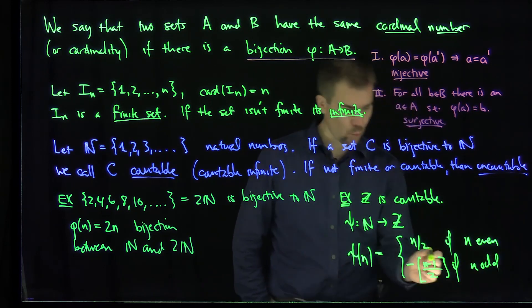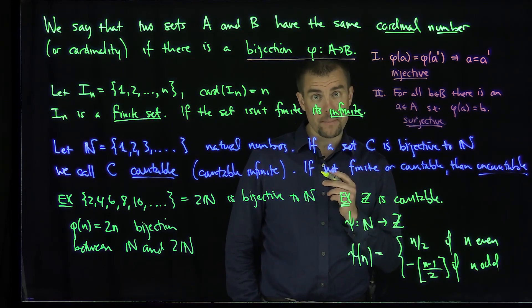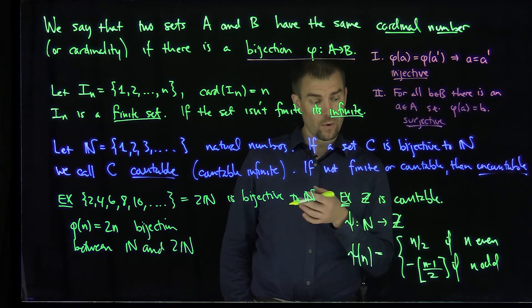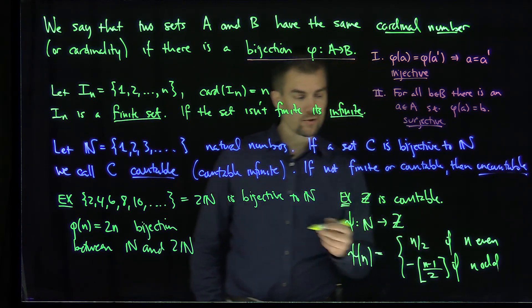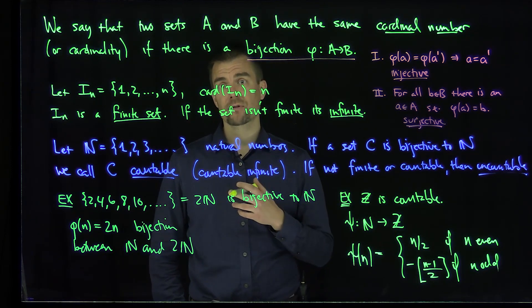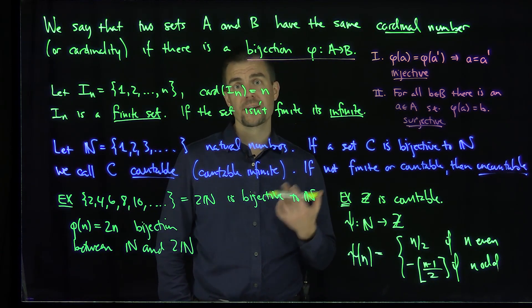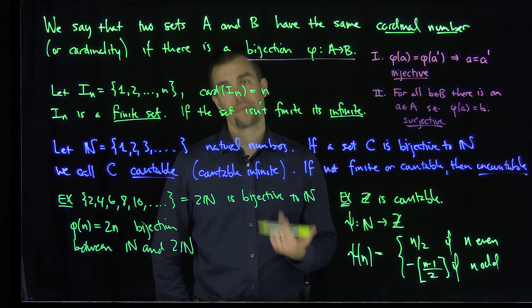And if I look at negative (n minus 1) over 2 if n is odd, for example, if n is 1, I map to 0. If n is 3, I map to negative 1. If n is 5, I map to negative 2. We see this psi is a bijection, so that proves that Z is countable. In future videos, we'll try to understand properties of countable sets and give examples of sets which are not countable. Thank you very much.